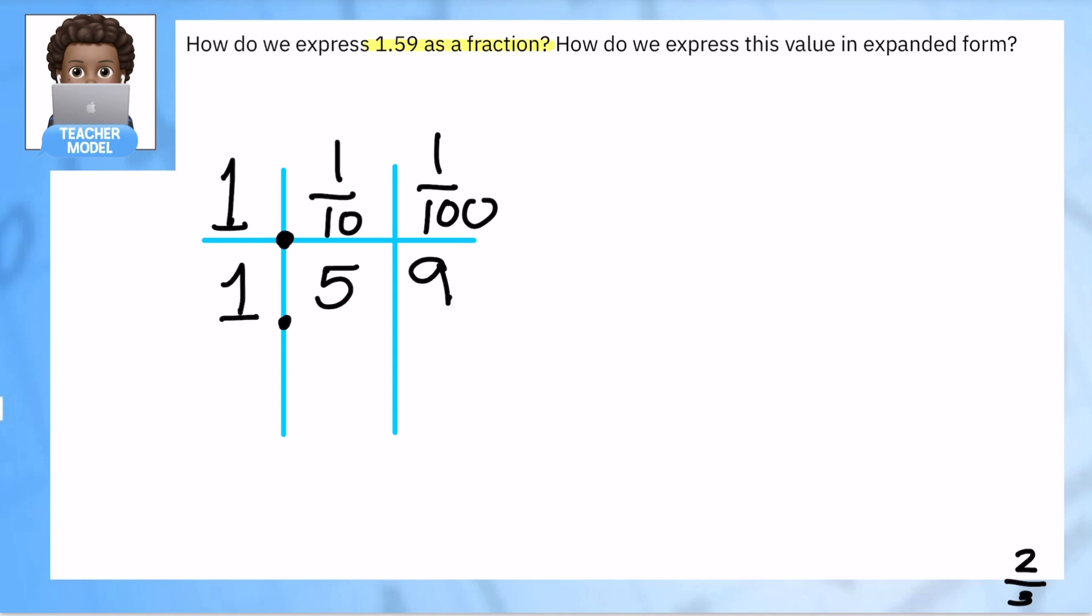And fifty nine hundredths. Now I can use this to write it in expanded form. So for example, here I have one plus I have five in the tenths place, so five tenths, and nine in the hundredths place, or nine hundredths.